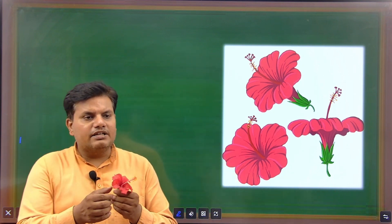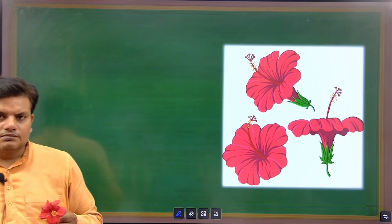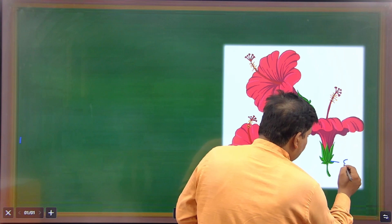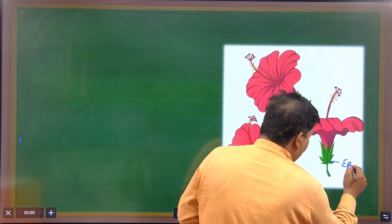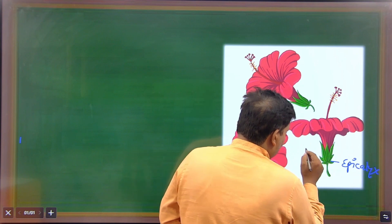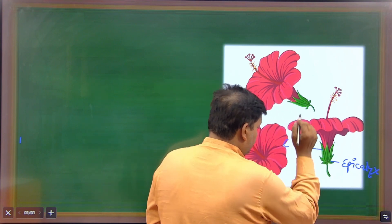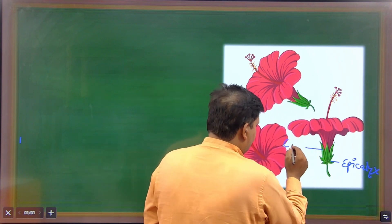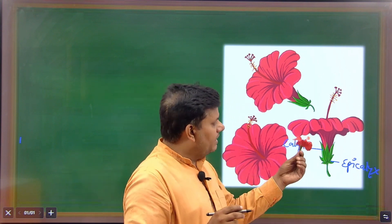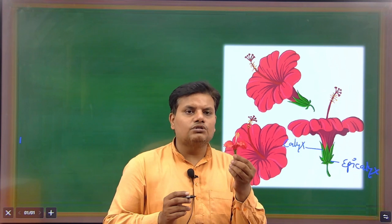Epicalyx and Calyx are both green in color. This is a part of the Epicalyx. This one is a Calyx. Epicalyx and Calyx are both green in color and support the flower.